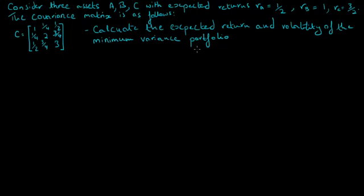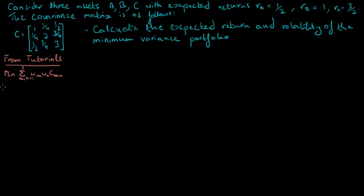Let's start by setting up the optimization problem the way we did it in tutorials. We have to minimize the variance of this 3-asset portfolio subject to the constraint that the sum of weights of all assets must equal 1. There is no specified constraint on portfolio return, because we are trying to find a portfolio with minimum variance and not one that meets a particular return target. We will multiply the objective function by a half, because minimizing a function or half of the function is equivalent, and multiplying by half will make our calculations much easier later on.